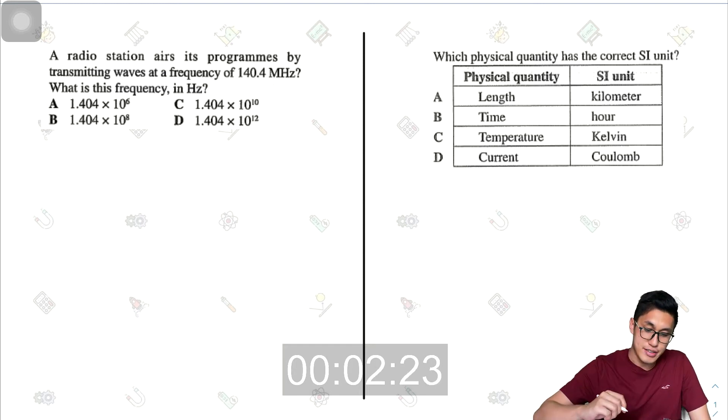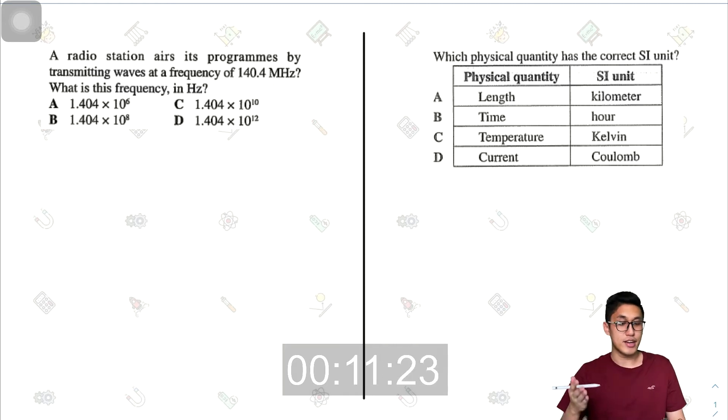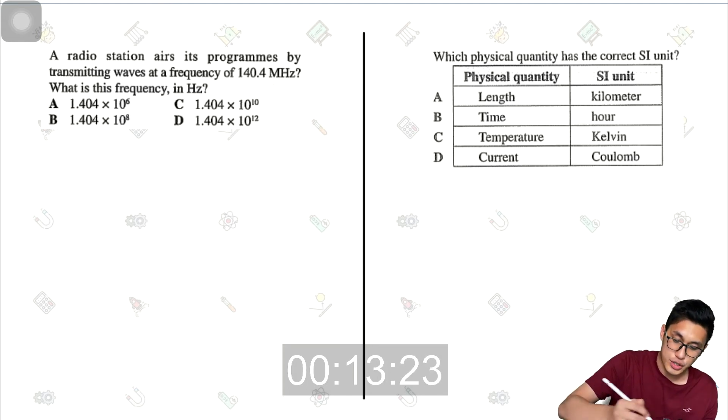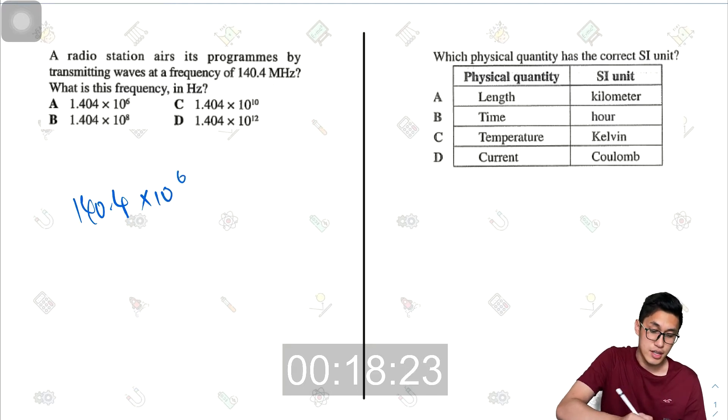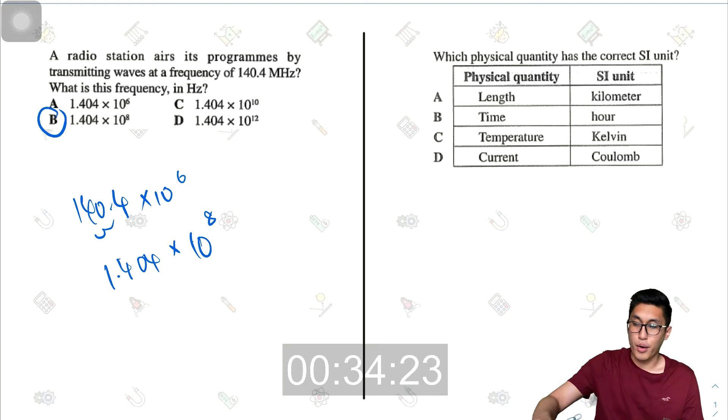A radio station airs its programs by transmitting waves at a frequency of 140.4 megahertz. What is this frequency in Hertz? So 140.4 mega means times 10 to the power of 6. So if I want to move the decimal places to the front by two places, I'll have to add another 10 to the power of 2. So it'll be 1.404 times 10 to the power of 8. So the answer here would be B.